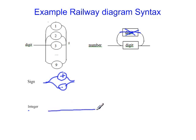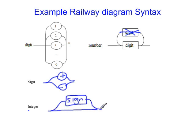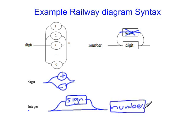We now want to define an integer using railway diagrams, which is the same as before. Either you have no sign at the front or you have a sign, so we have a pathway to either include the sign or not. That is then followed by a number. The number is previously defined so it goes in a square box. So an integer is either no sign or a sign, followed by a number.